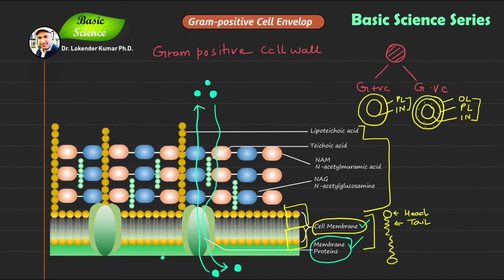Then you have the peptidoglycan layer. In gram positive cells, you have a thick, multi-layered peptidoglycan structure. This is an important structural feature, and you need to understand the structure of peptidoglycan from this illustration.